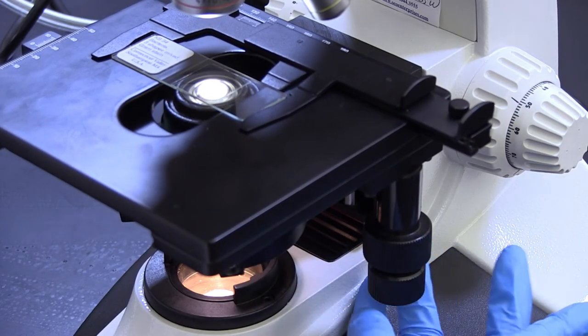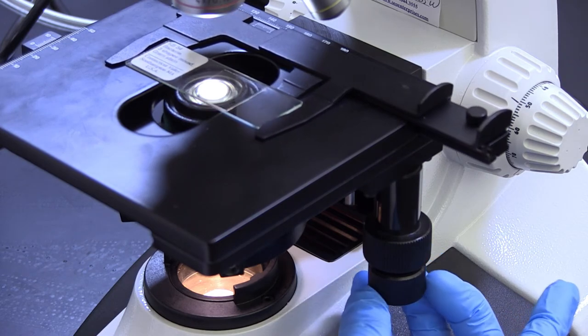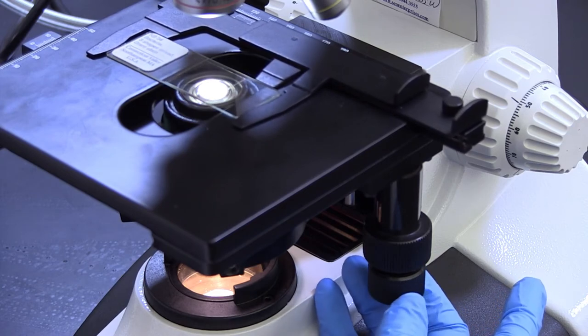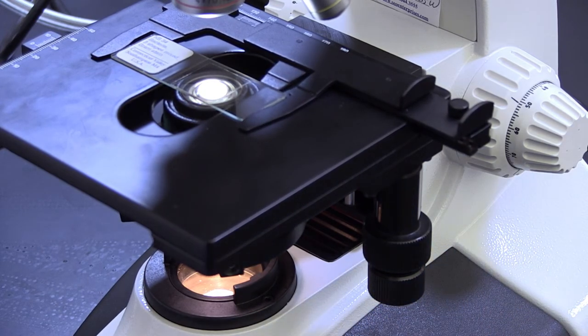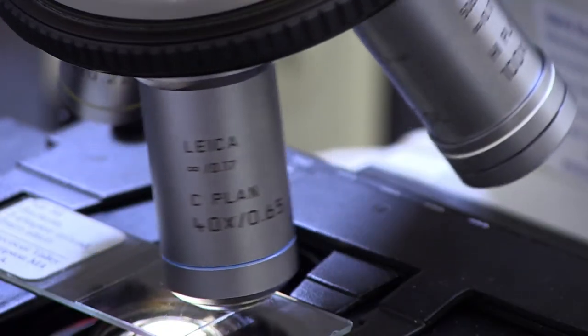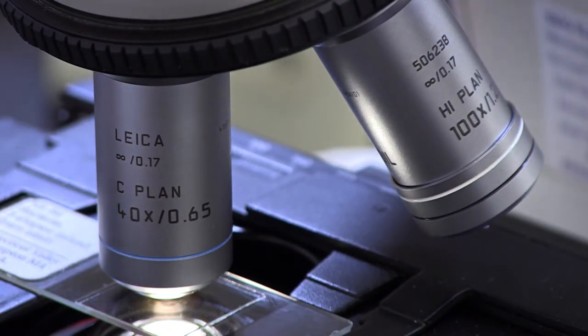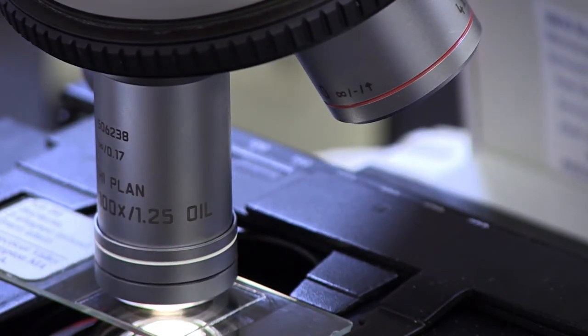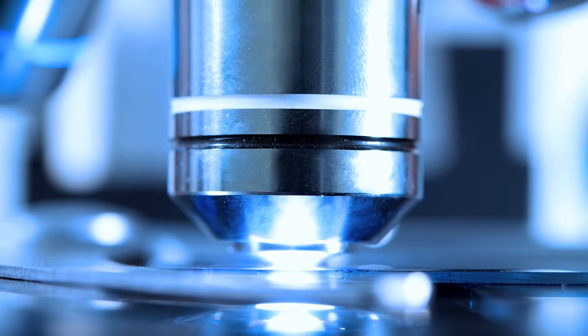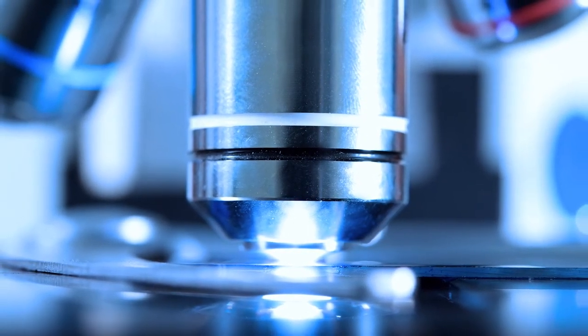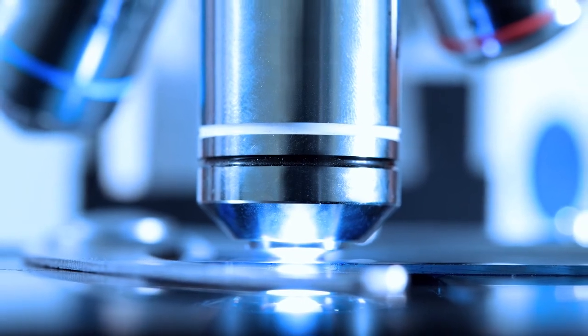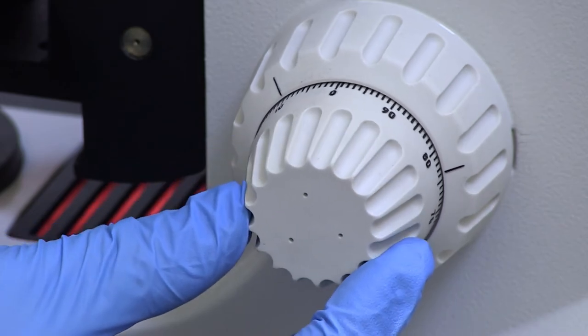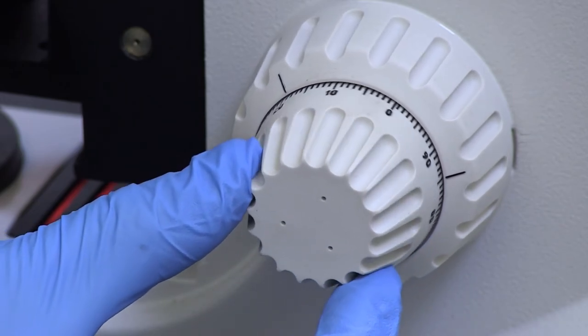Move the slide so that the area you wish to examine is centered in the microscopic field. Your microscope is parcentered, meaning that once a specimen is located in the center of the field, it will remain centered when changing objectives. Put the highest objective into place, making sure that it clicks into position. Most microscopes are parfocal, meaning that if a specimen is focused with one objective, the image should remain sharp as the objectives are changed. You will have to make small adjustments to both the fine focus and diaphragm of each new objective.